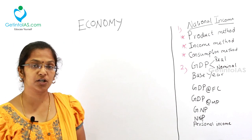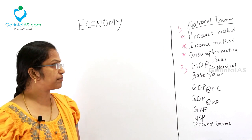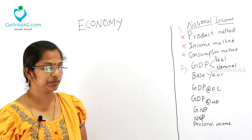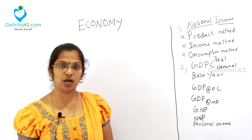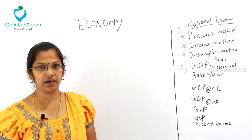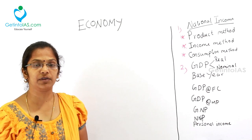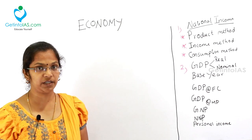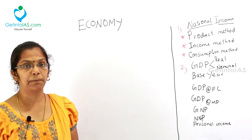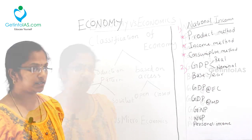In national income, there are three methods to calculate the national income: product method, income method and consumption method. In GDP, we will be seeing what is real GDP, what is nominal GDP, then GNP, NNP, and finally we will be ending up with what is personal income and what is personal disposable income. Come, let us go into the topic.